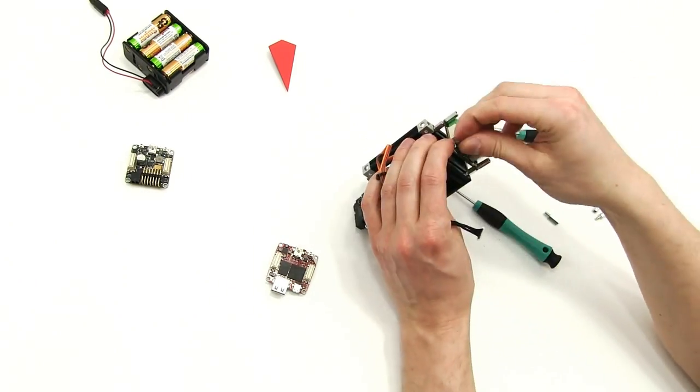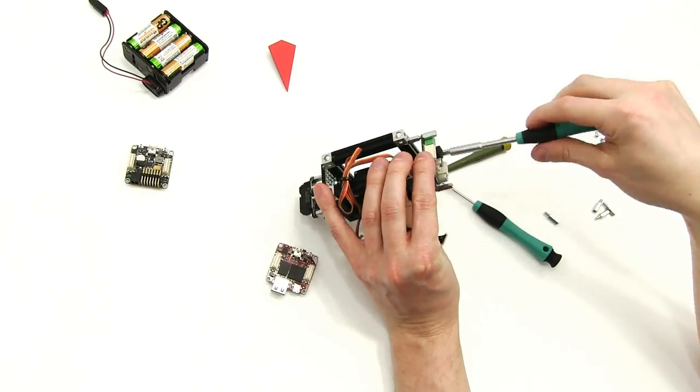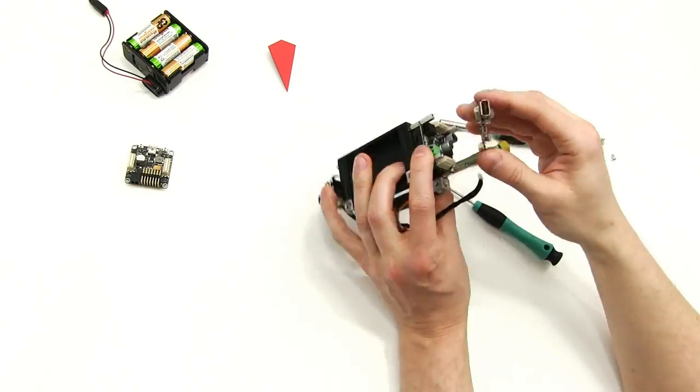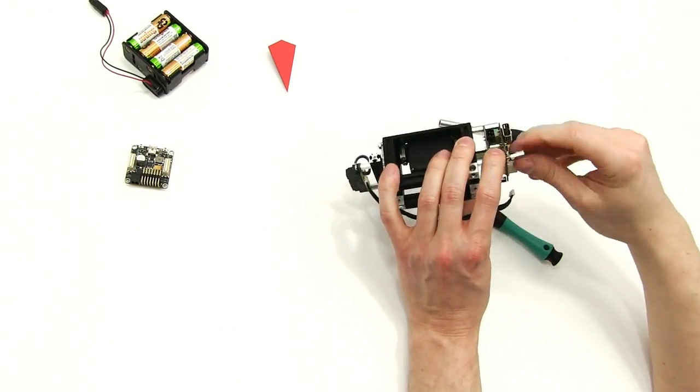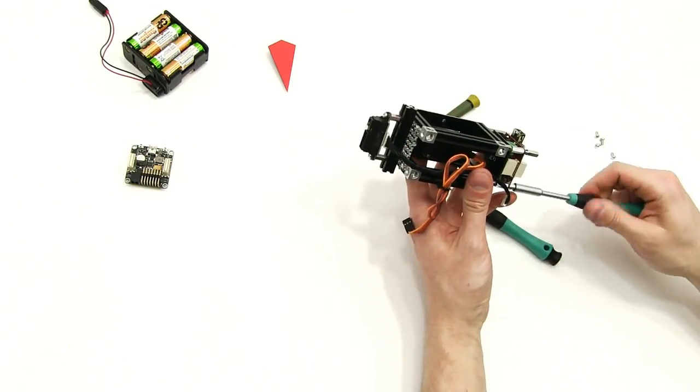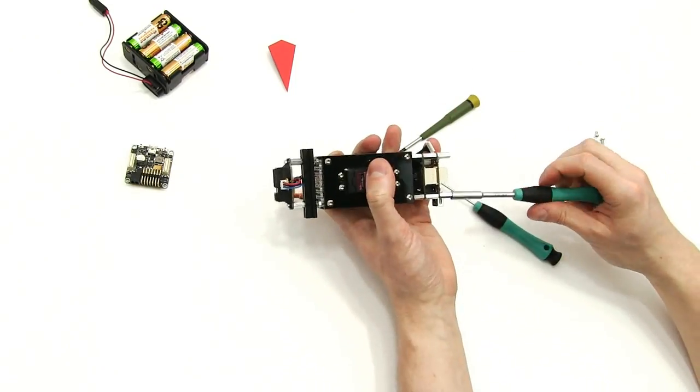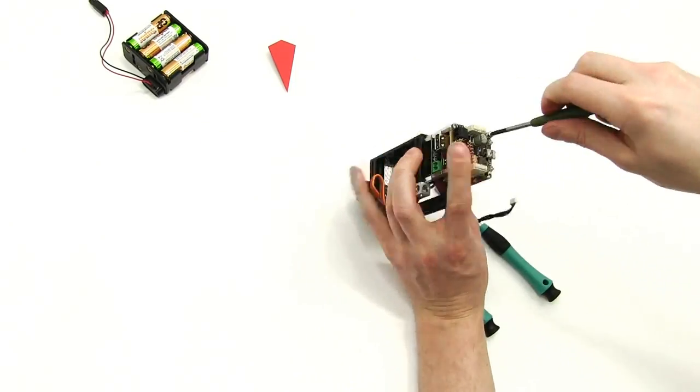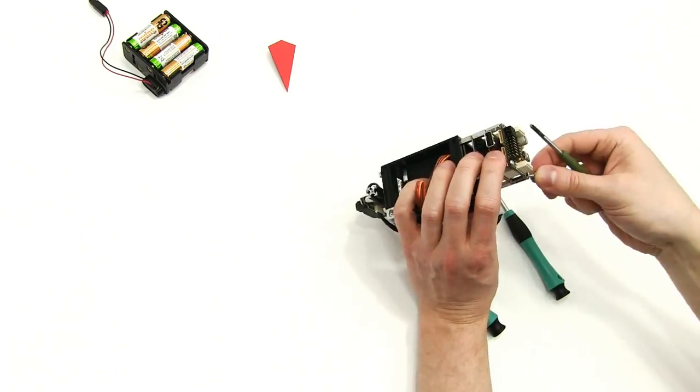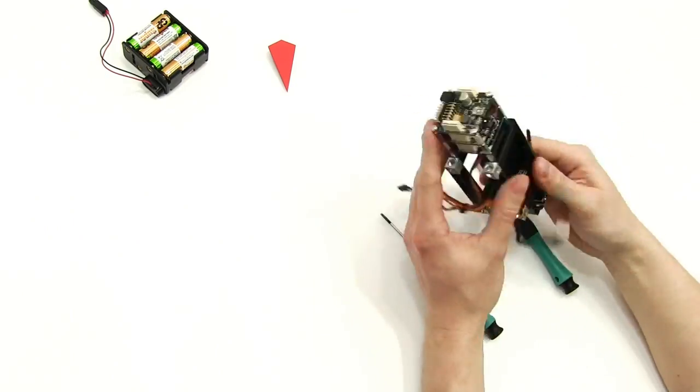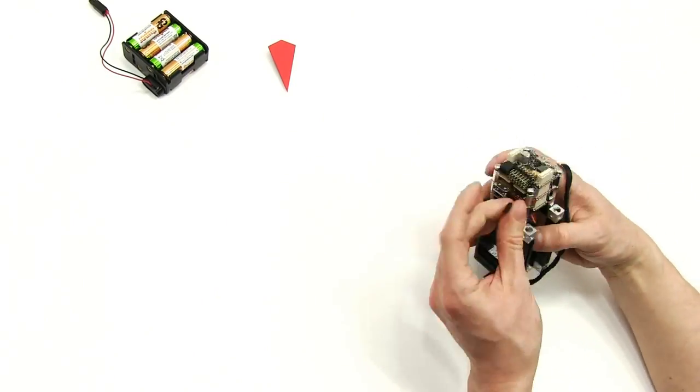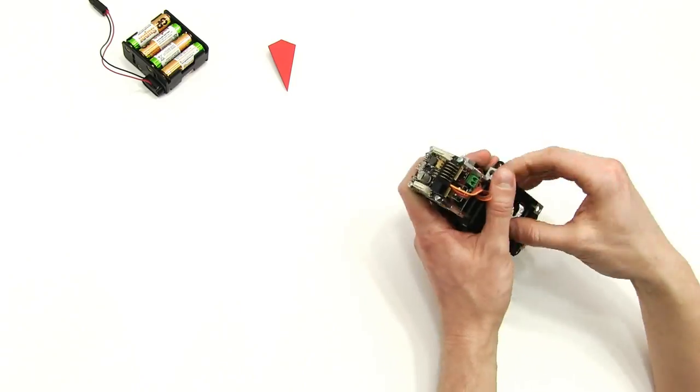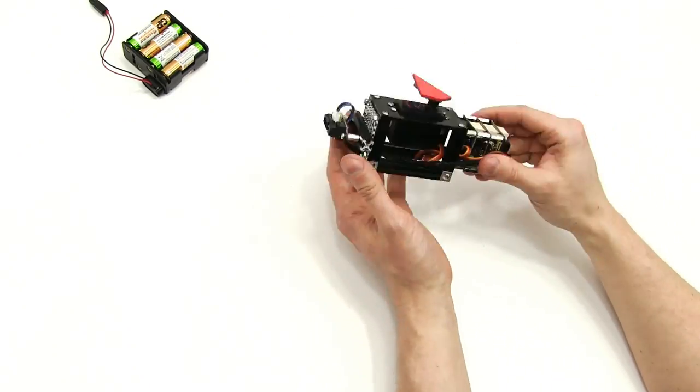Every module of the TinkerForge Building Block System has its own powerful and easy-to-use API. The API is currently available for C, C++, C Sharp, Delphi, Lazarus, Java, JavaScript, LabVIEW, Mathematica, Matlab, Octave, Perl, PHP, Python, Ruby, Shell and VisualBasic.net.